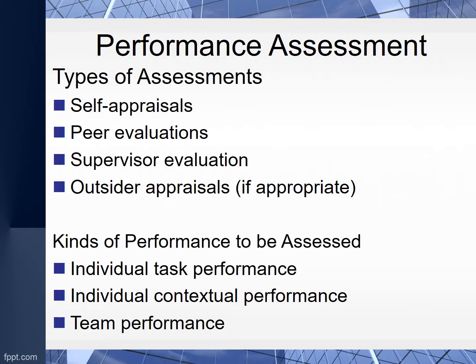The next step is to actually do a performance assessment. That assessment could start with a self-appraisal. Other types of assessment include peer evaluations, supervisor evaluations, and outsider appraisals — someone outside of the organization or outside of the team. When assessing a team, there is individual task performance, individual contextual performance — how they do the work and what they accomplish — and team performance, meaning how they work together with synergy within the team.